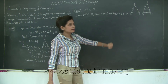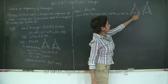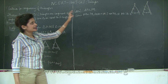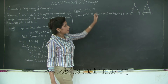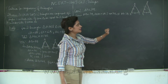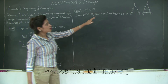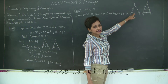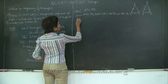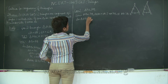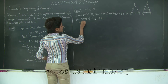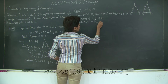Since triangles ABC and SQR are congruent by SAS, we get angle ACB equals angle SRQ by CPCT — corresponding parts of congruent triangles. But we were also given that angle ACB equals angle PRQ. Therefore angle SRQ equals angle PRQ, which means S and P coincide — that is, S and P are the same point. Therefore triangle ABC is congruent to triangle PQR.